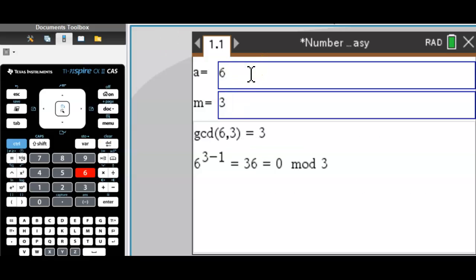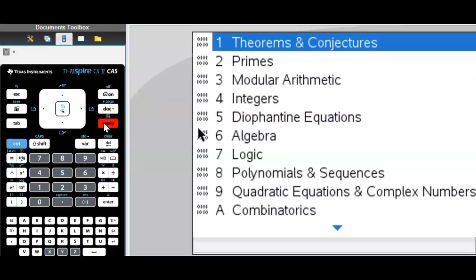To show you, this theorem only gives you 1 if a and m, 6 and 3, are co-prime. Here they are not, so we don't get 1, which is correct. Let's continue.